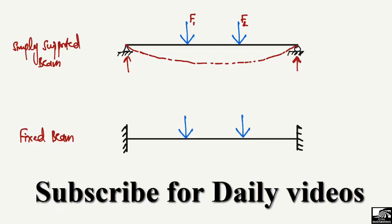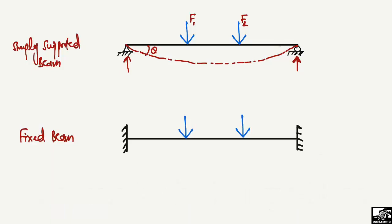We can also see that there will be some kind of slope at these two ends — I represented it by θ. So we have some slopes at the ends of the simply supported beam. Now if I consider the fixed beam, the same loads F1 and F2 are acting on this beam.